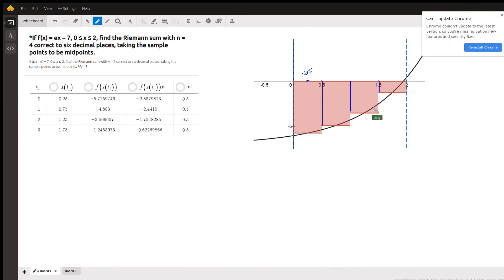This black curve is the graph of y equals e to the x minus 7. And we're supposed to calculate the area under the curve, or in this case above the curve under the x-axis, from the interval from 0 to 2.